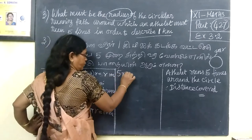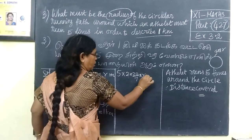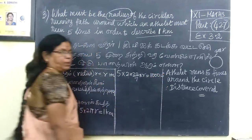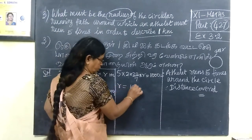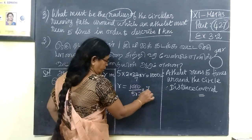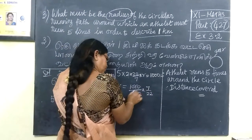5 into 2 into 22 by 7 into R equal to 1 kilometer. Now, how much? 1000 meters. So R equal to 1000. You have to divide by 5 into 2 then 7 by 22.